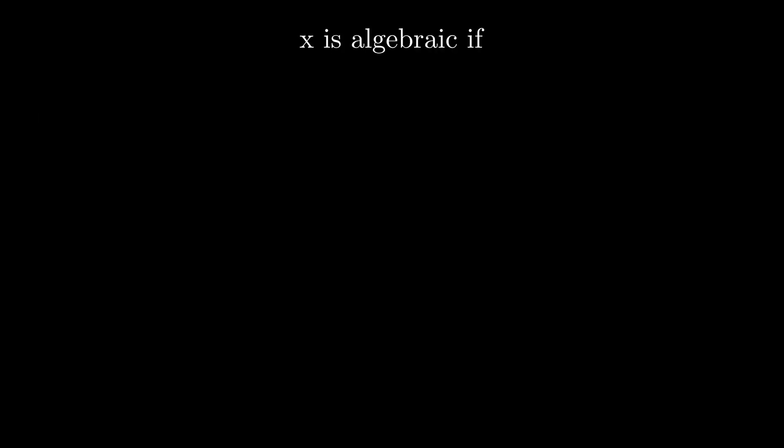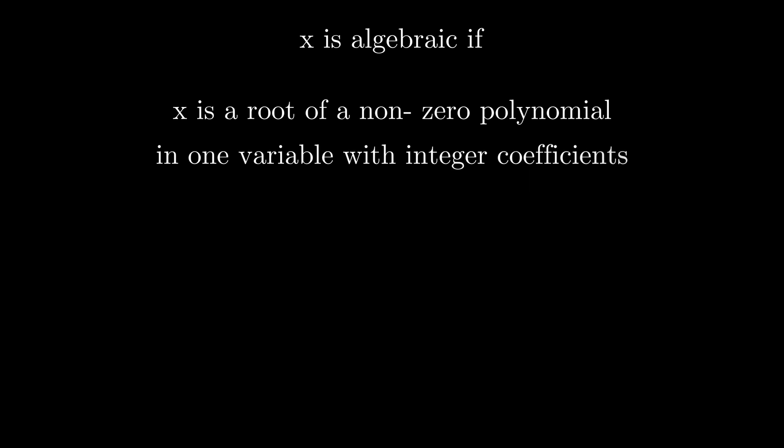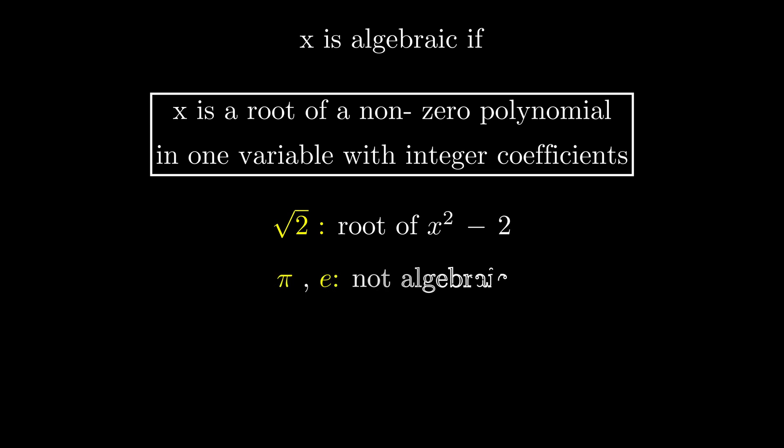A number is algebraic if it is a root of a non-zero polynomial in one variable with integer coefficients. For example, root 2 is algebraic because it is a root of x squared minus 2. But pi and e are non-algebraic, which is not so easy to prove.